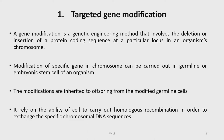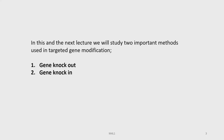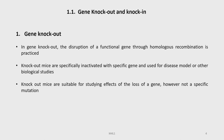We have learned about homologous recombination in our last lectures. In the next lecture, we will study the two important methods used in targeted genetic modification. The first one is gene knockout and the second one is gene knockin.